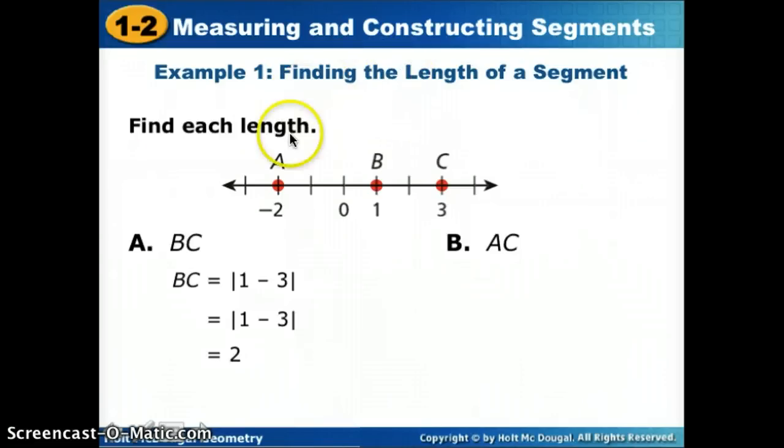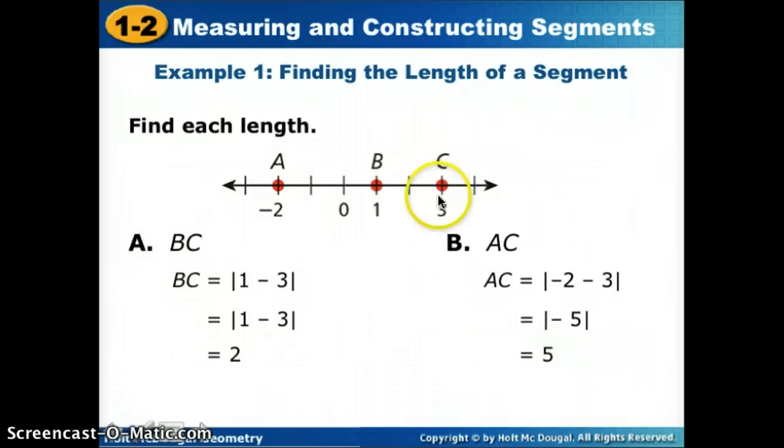Another example, if we wanted to look at AC, we would take the location of A, which is negative 2, minus the location of C, which is 3. Negative 2 minus 3 is negative 5. What is negative 5's distance from 0? We would change that to a positive 5. You could just count that as well: 1, 2, 3, 4, 5. That's how long segment AC is.